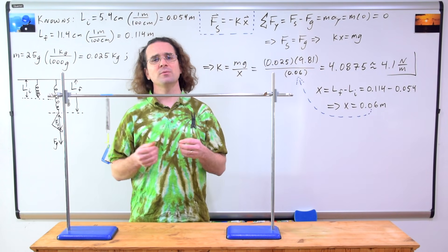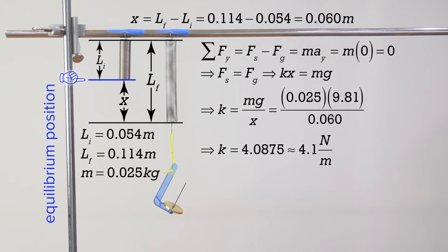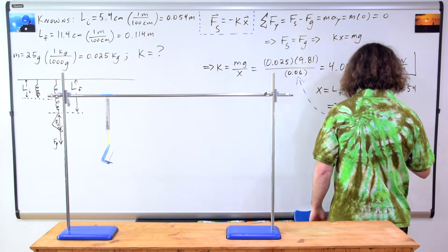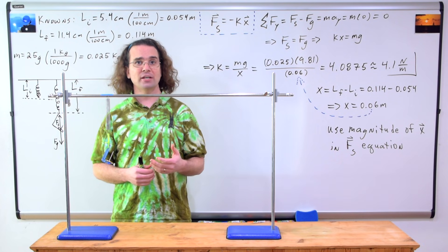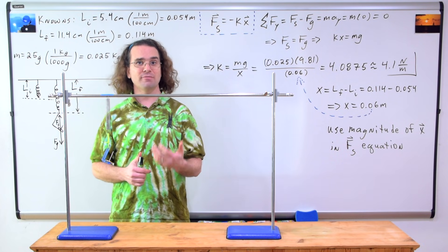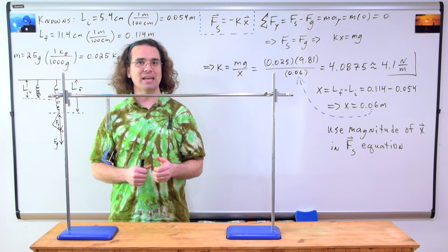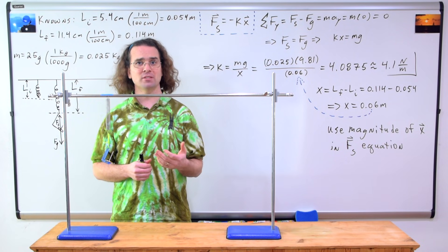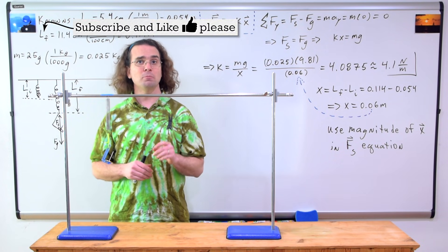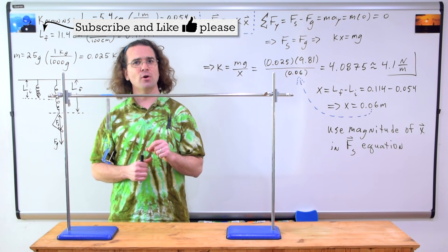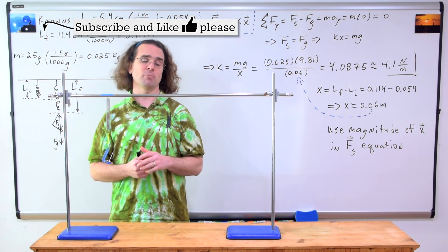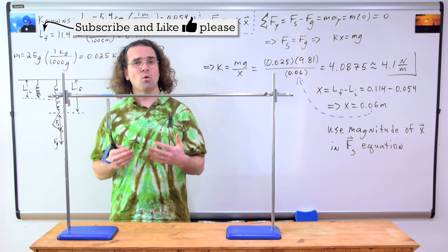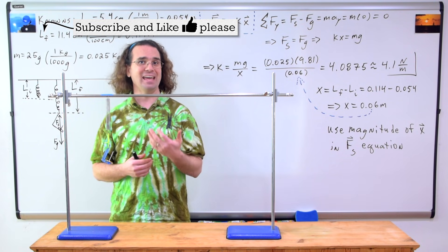Thank you very much for learning. Mr. P, the mass is displaced downward, so the displacement from rest position should be negative 0.060 meters, right? Again, we already determined the direction of the spring force in the free body diagram, so we do not plug in a negative again. Instead, we use the magnitude of the displacement from equilibrium position in the spring force equation. So we use positive 0.060 meters, even though the displacement is negative 0.060 meters. We do not want to reverse the direction by plugging in a negative.